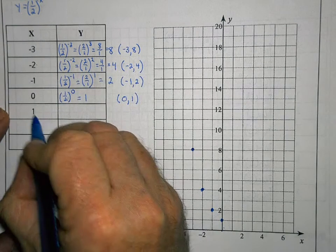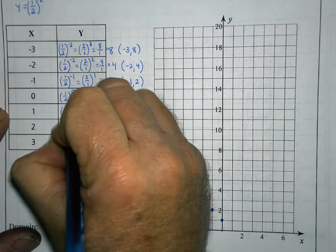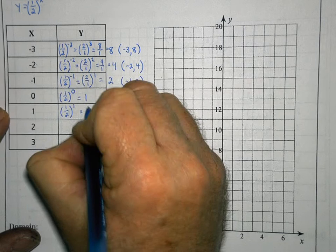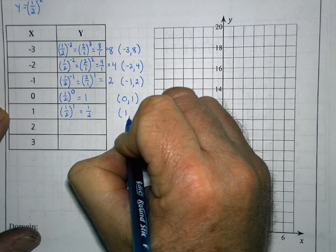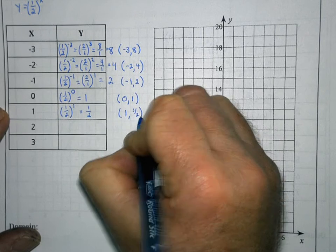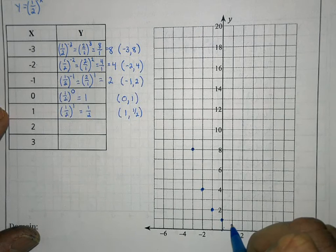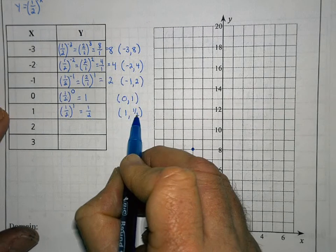Now substituting 1 for x, my expression becomes one-half to the 1 power, which is just equal to one-half. So when x is 1, y is one-half. On the graph, I go over to 1 on the x-axis and up half a spot on the y-axis. When I'm plotting fractions, I'm just estimating about where they are.